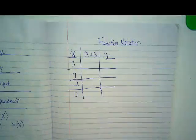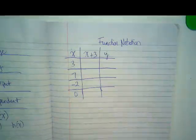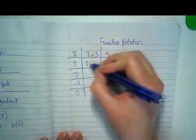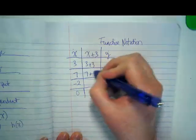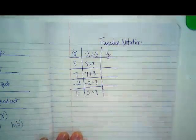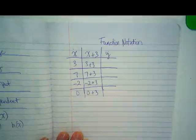And then in the middle of this table, we're going to put those inputs in for the x's. So, this would end up being 3 plus 3, 7 plus 3, negative 2 plus 3, 0 plus 3. Thumbs up if you're with me so far.